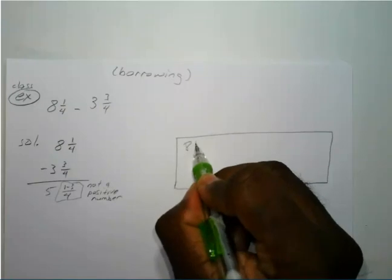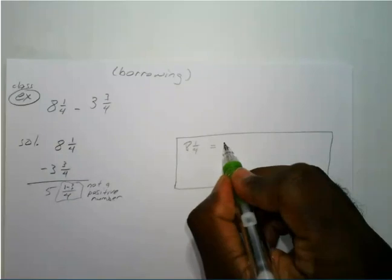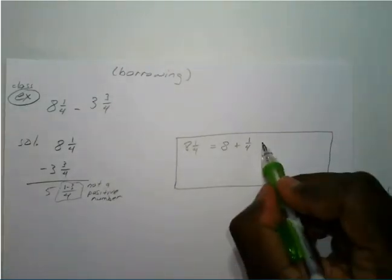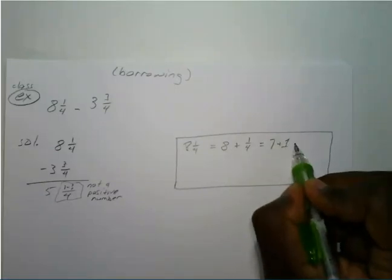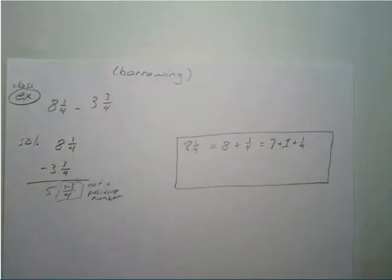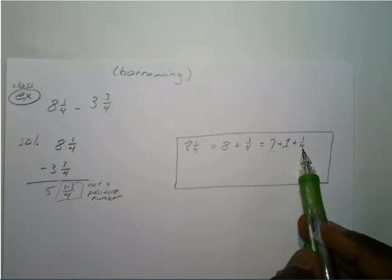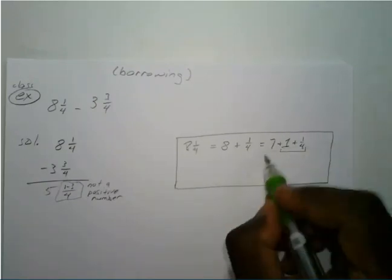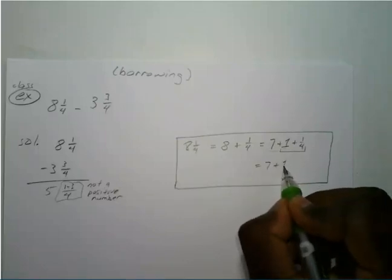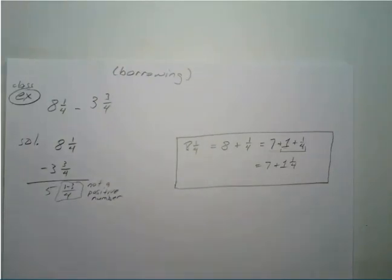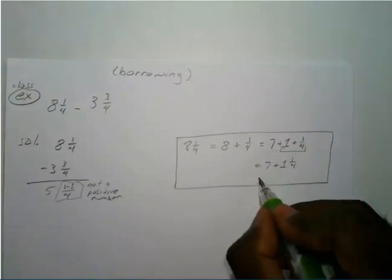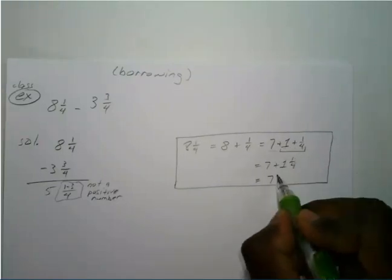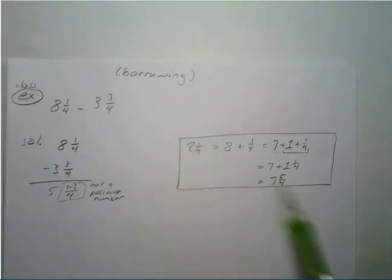We have eight and one-fourth, which is really eight plus one-fourth. To borrow, we rewrite that as seven plus one plus one-fourth. Then we combine the one and one-fourth: one and one-fourth converted to an improper fraction gives five-fourths, since four times one is four plus one is five. So eight and one-fourth equals seven and five-fourths.